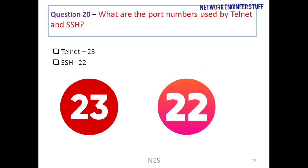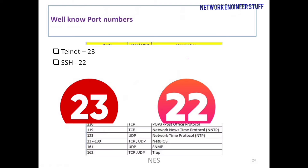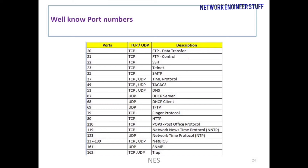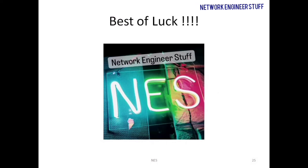Question number 20: what are the port numbers used by Telnet and SSH? Telnet uses port number 23 and SSH uses port number 22. Port numbers identify services — interviewers often ask about well-known port numbers such as HTTP or DNS. You can refer to the well-known port numbers table shown here to remember these commonly asked port numbers.